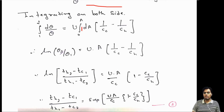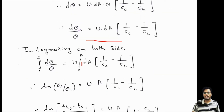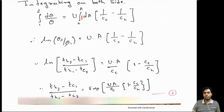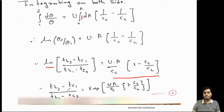For the counter flow heat exchanger, from the figure, theta2 = TH2 - TC1 and theta1 = TH1 - TC2. Replacing theta2 and theta1 with these temperature values gives ln[(TH2 - TC1)/(TH1 - TC2)] = UA·(1/CC - 1/CH). Taking CC out of the bracket: ln[(TH2-TC1)/(TH1-TC2)] = (UA/CC)·(1 - CC/CH). Removing the log gives: (TH2 - TC1)/(TH1 - TC2) = exp[(UA/CC)·(1 - CC/CH)]. This is Equation 3.